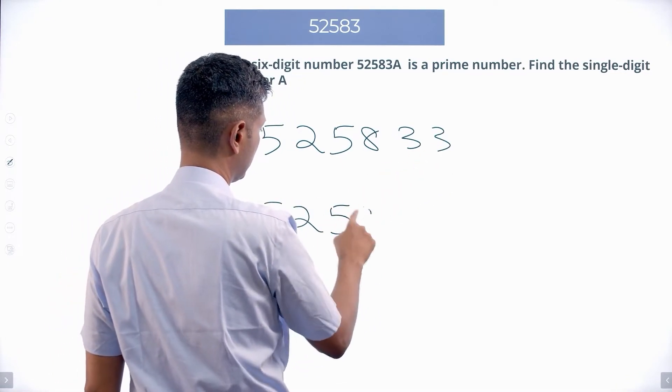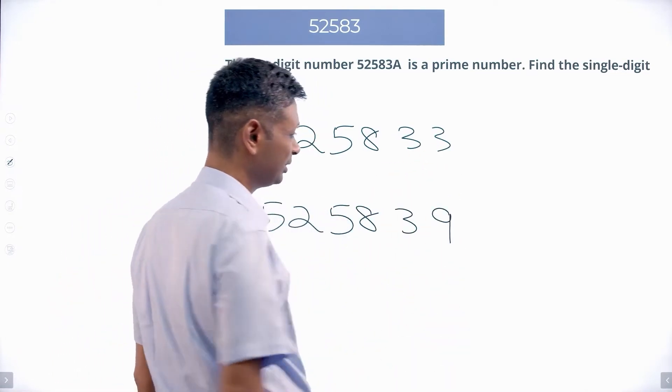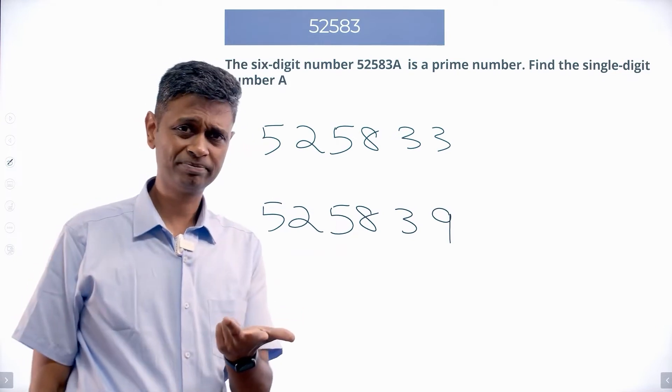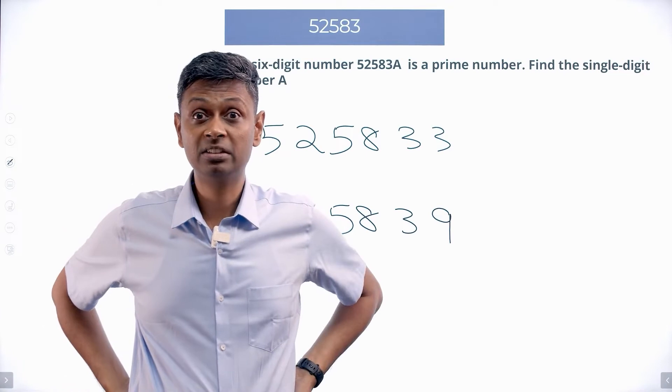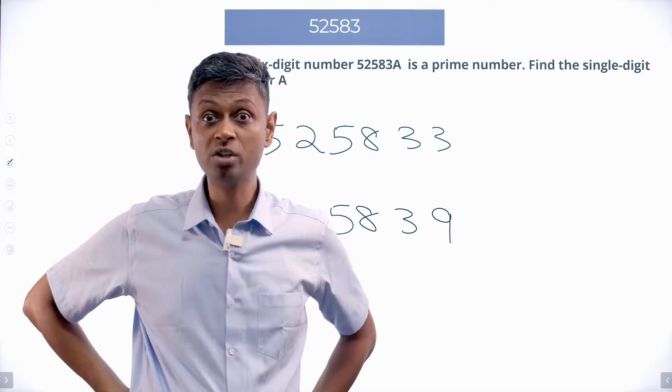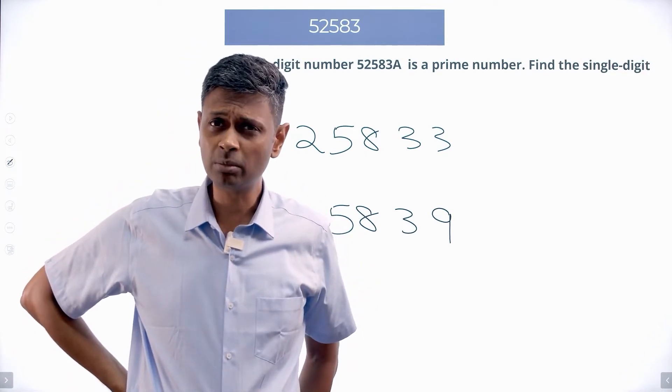525833 and 525839. I know these numbers are not multiples of 2, 3, or 5. Maybe they are multiples of 7, maybe they are multiples of 11, 13, 17, 19, 101. I'm in trouble.